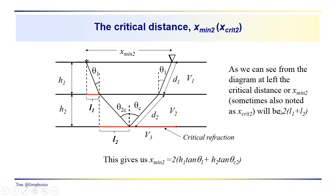Just to emphasize: sometimes we call it x-min-two, sometimes x-crit-two — the critical distance for the second refraction — and it equals two times L1 plus L2, L1 and L2 as defined.